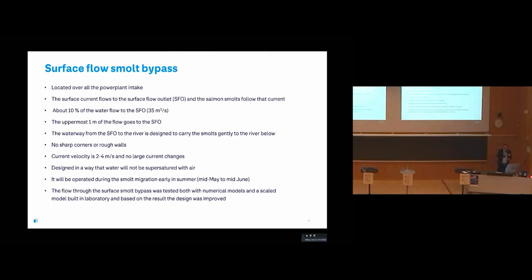The surface flow smolt bypass is located above the power plant intake. It takes the uppermost one meter of the water and 10% of the flow goes through the bypass. The waterway from the intake of the smolt bypass is designed to carry the smolts gently to the river below. There are no sharp corners. The current velocity is 2 to 4 meters per second and there are no large or sudden current changes.